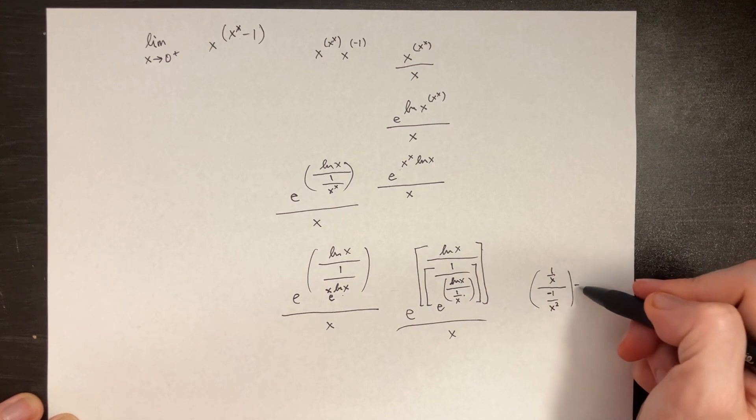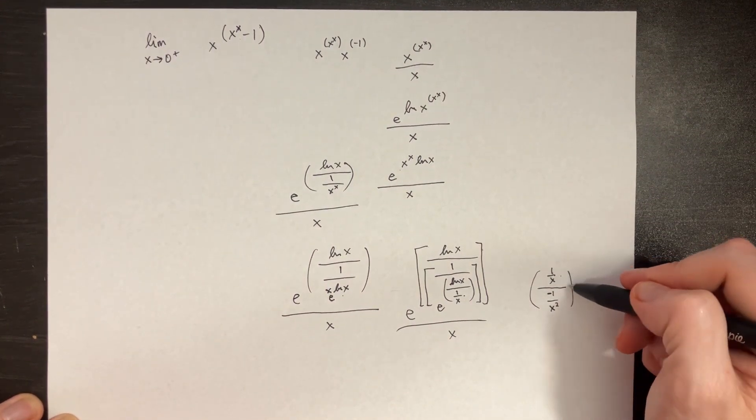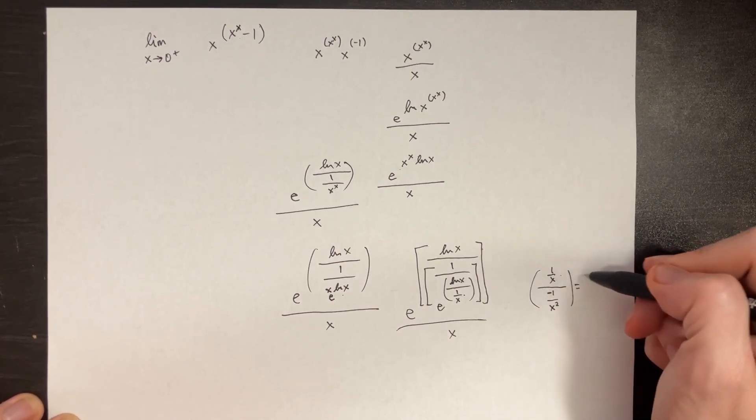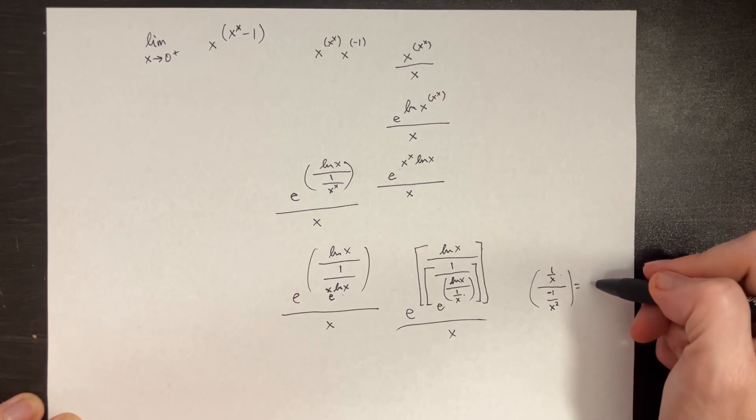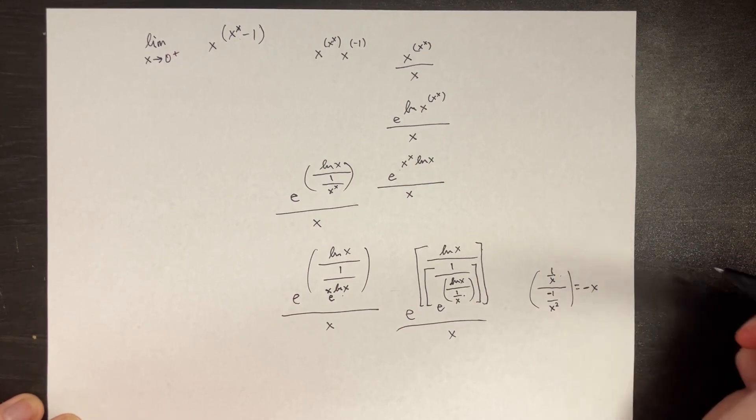Now when we rewrite this, we can actually just multiply the top by the reciprocal of the bottom. So we just get 1 over x times x squared over negative 1, which is just going to be equal to negative x. So all this just simplifies to negative x.